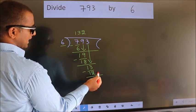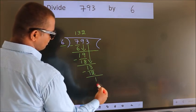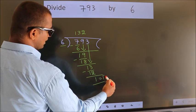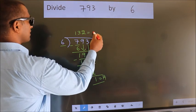No more numbers to bring down. So, we stop here. This is our remainder. This is our quotient.